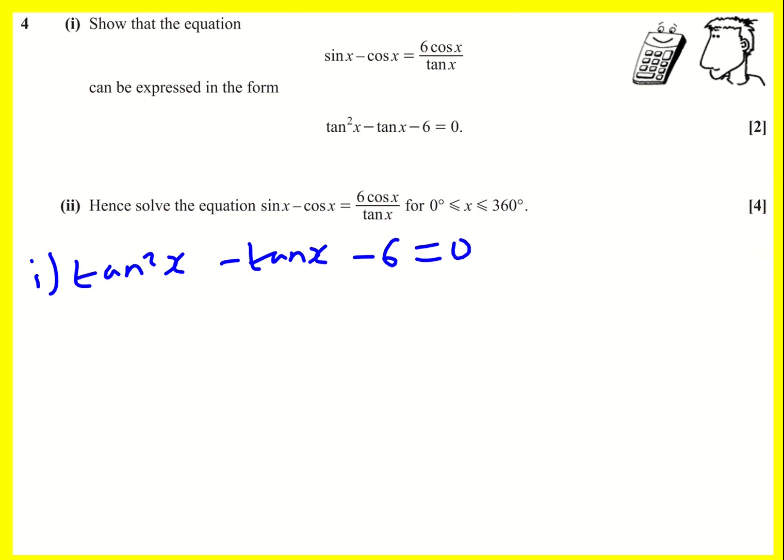Okay, so now we can do a substitution and let u equal tan x. So it becomes u squared, because that's what tan squared x is. u squared minus u minus 6 equals 0. We can factorise this.